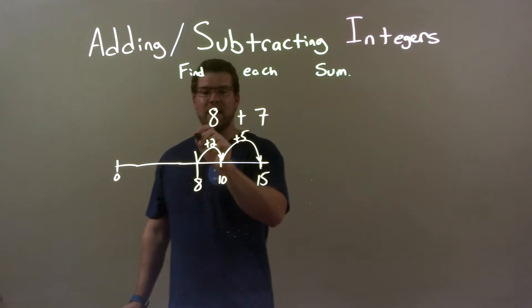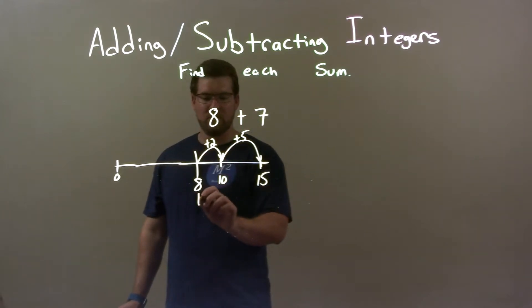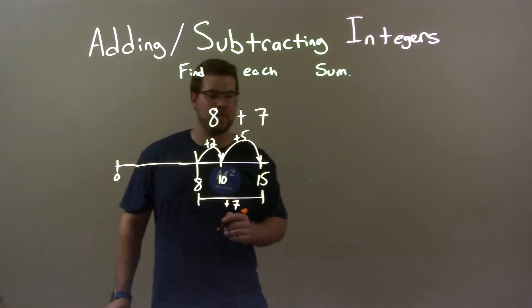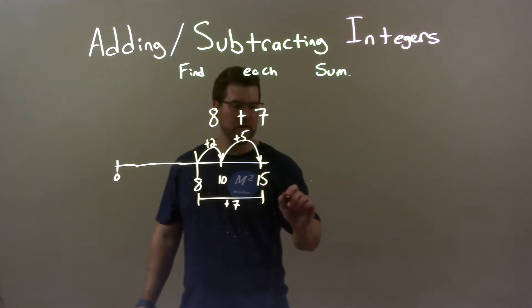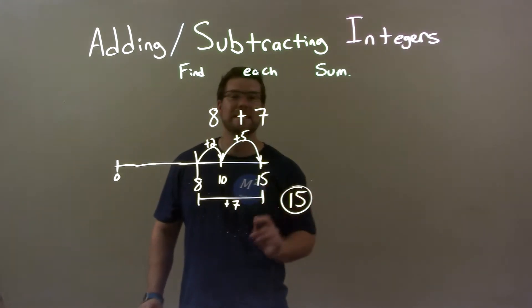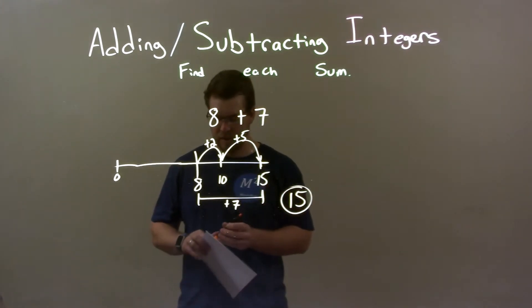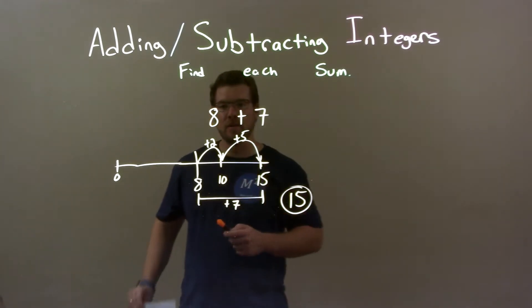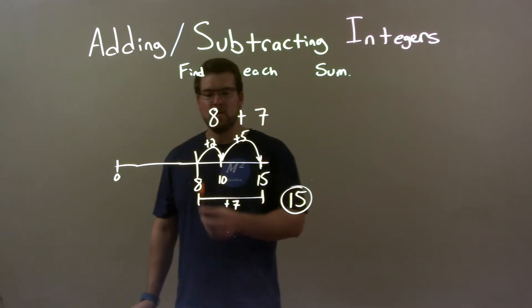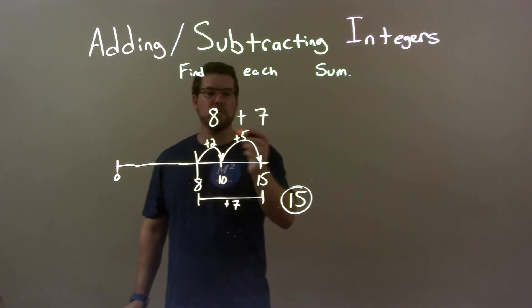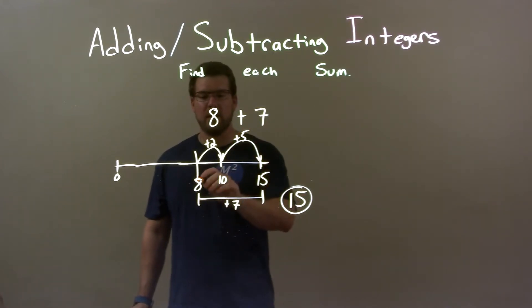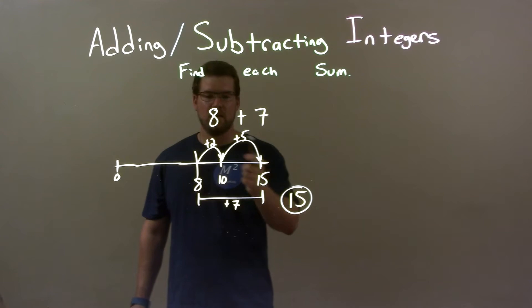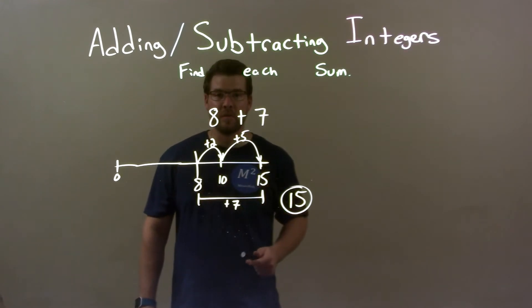So that means 8 plus 7 gives us 15. Our final answer is 15. Quick recap: we're given 8 plus 7. We start with 8, and I broke 7 down to be 2 plus 5. So 8 plus 2 is 10, plus another 5 is 15. Our final answer is 15.